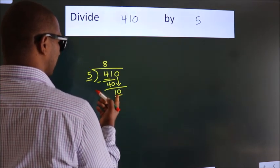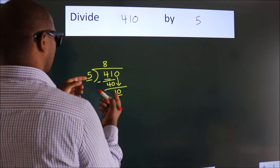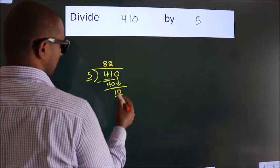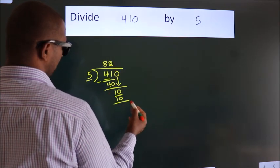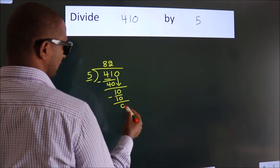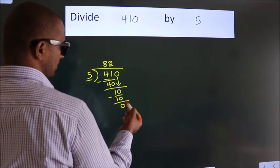When do we get 10? In 5 table. 5 twos, 10. Now we subtract.